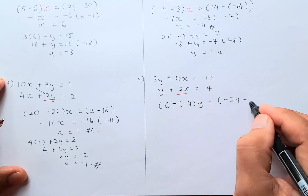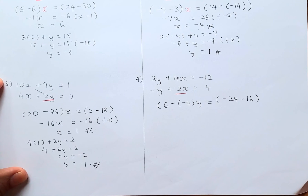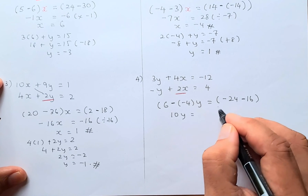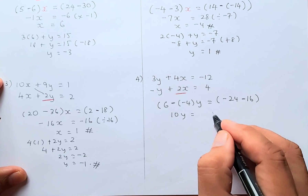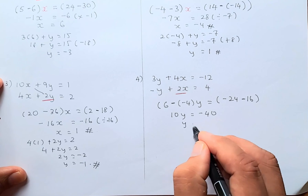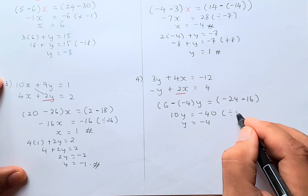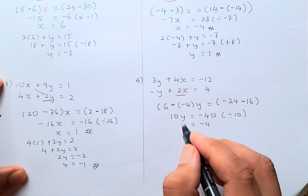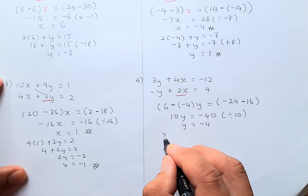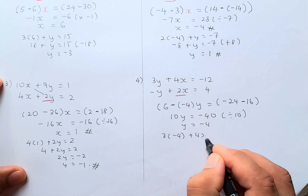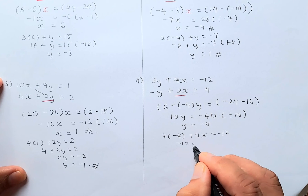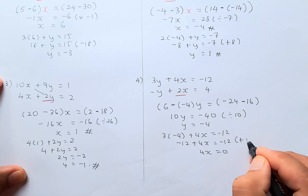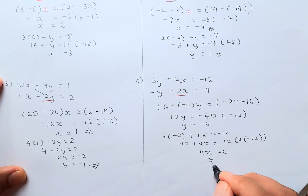Minus 4 times 4 is 16. So you solve it: 6 minus minus 4 is going to be 10y, equals minus 24 minus 16, which is minus 40. Then you solve it: y equals negative 4 because you divide by 10 on both sides. Next, we're going to find x. Once you find your y, you substitute — substitute in equation 1. So 3 times negative 4 plus 4x equals negative 12. So minus 12 plus 4x equals minus 12; 4x equals 0, and x equals 0. So that will be the answer.